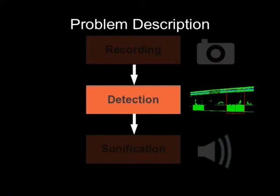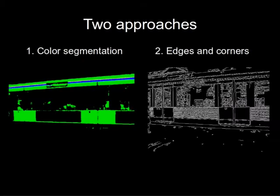For detecting the doors we followed two different approaches. One approach is using colors and color segmentation, and the other one is using edges and corners to find doors.